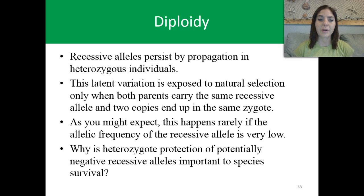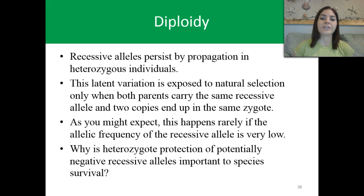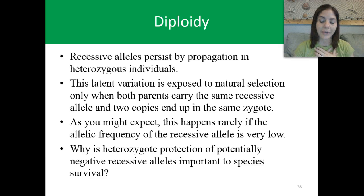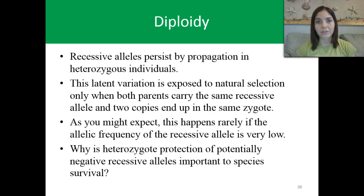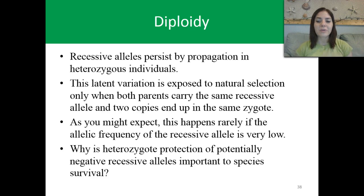In diploidy, recessive alleles persist by propagation in heterozygote individuals — meaning I'm a carrier. I'm carrying the trait for blonde hair, carrying that little B with me. This latent variation is exposed to natural selection only when both parents carry the same recessive allele and two copies end up in the zygote. If I select a mate and I contribute my little B and he also has a little B, we could have a blonde child — even though both of us have brown hair. It happens very rarely if the allelic frequency of the recessive allele is very low.